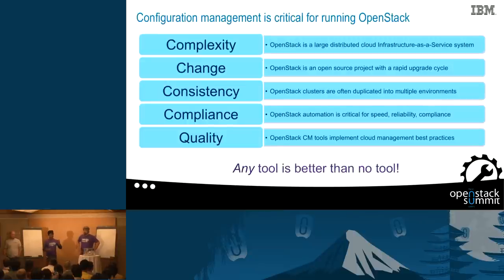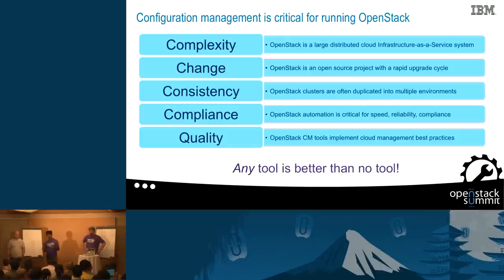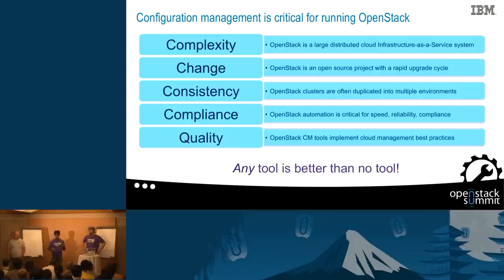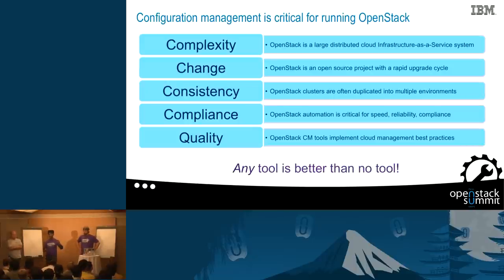The other big reason why we need deployment and software configuration management tools around OpenStack is it's an open source project with a large velocity of change. More than millions of lines of code are being contributed to each release of OpenStack. You need tools which can absorb that velocity of change and produce consistent deployments again and again, environment after environment. Compliance is very key for IBM — organizations are sensitive to security compliance like HIPAA. And definitely the quality: there are so many parameters to fine-tune.